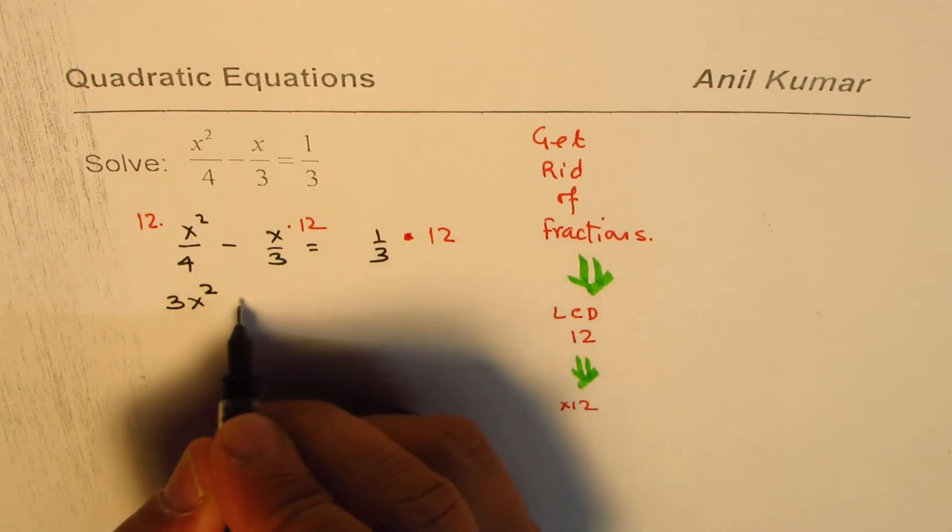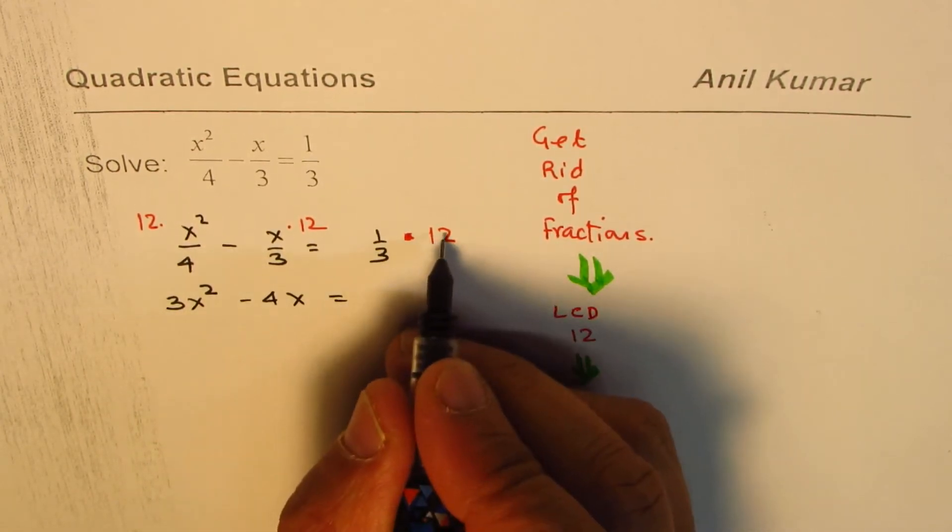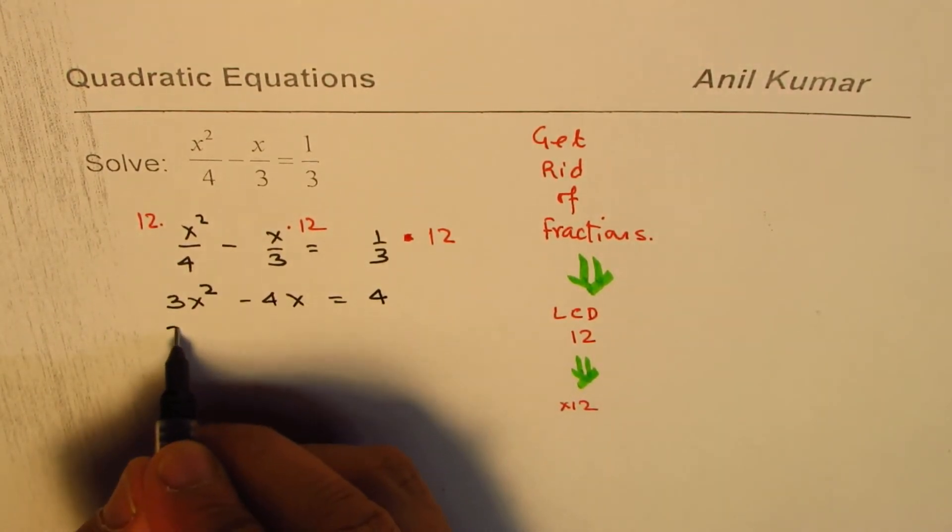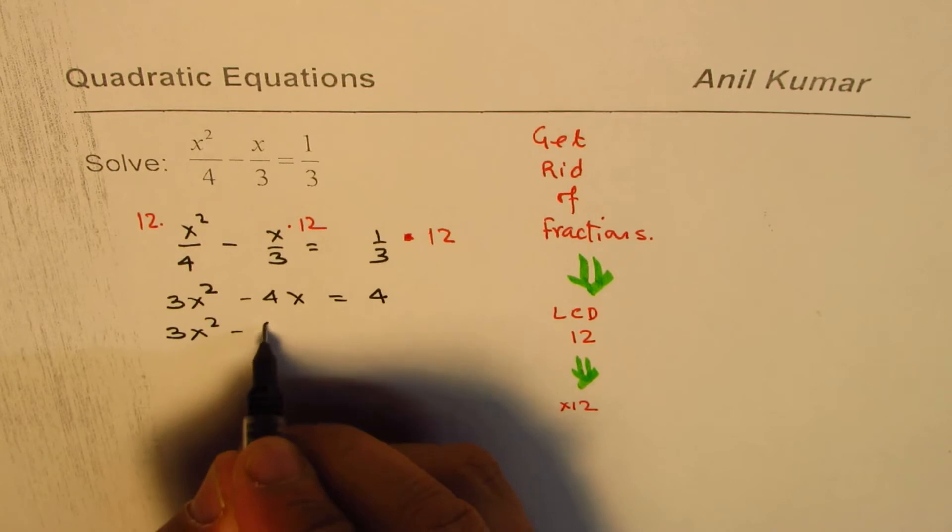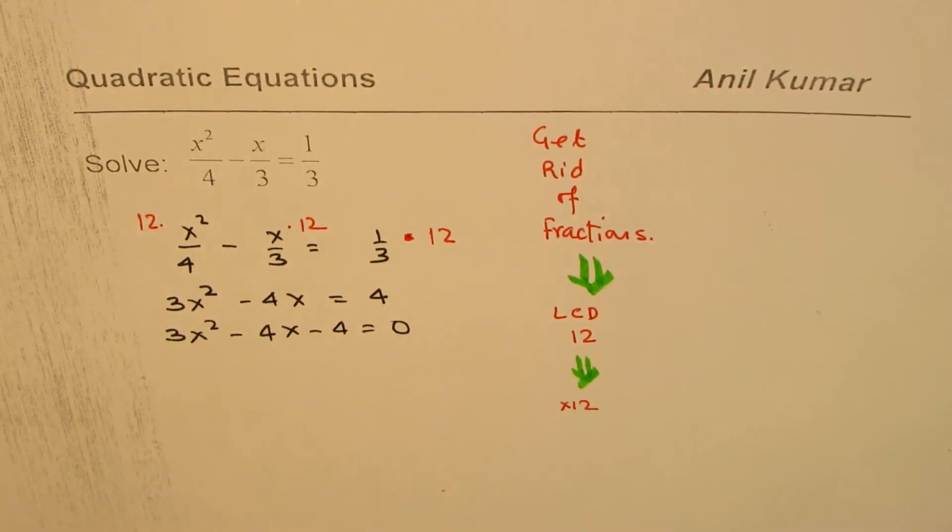And here you get 12 divided by 3 is 4. Now you can rearrange. Write this as 3x squared minus 4x minus 4 equal to 0. So we get a quadratic equation.